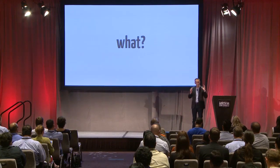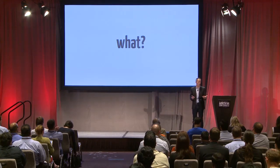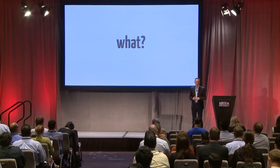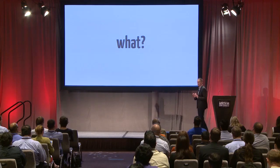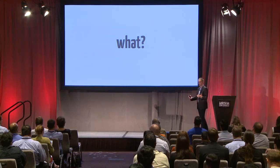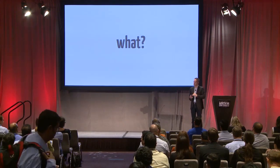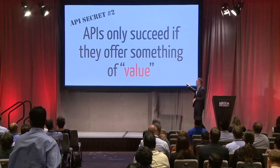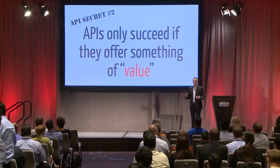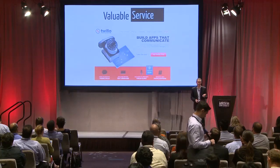The third question before thinking about the business model is what. What the hell is it that I'm selling? What's the service? What's the data? You can have a beautifully designed REST API and developers will shrug if there's not something of value behind it. It can also be that you have lots of things to offer, but you have to decide what you're going to start with — particularly with API programs you'll have a laundry list but you need to pick some to start. APIs only succeed if they offer something of value.